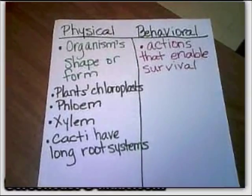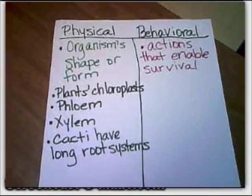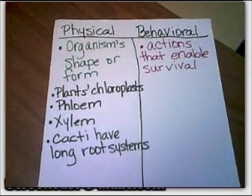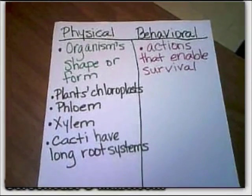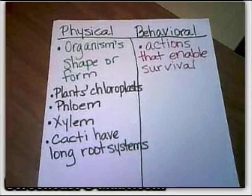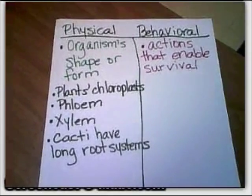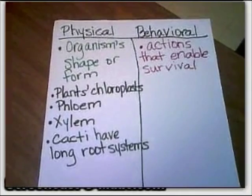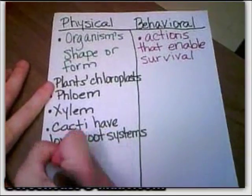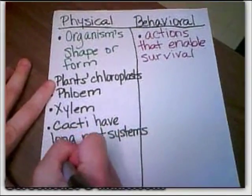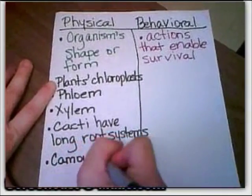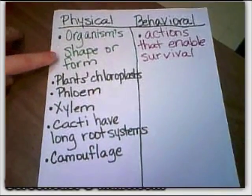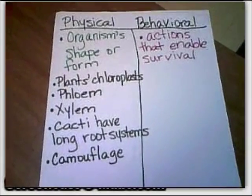There are lots of animals in different biomes that can do something unique that helps them avoid predators — it has to do with their appearance. I think it's what army people wear. Camouflage! That's definitely physical because it's a part of their shape or form, appearance or structure.